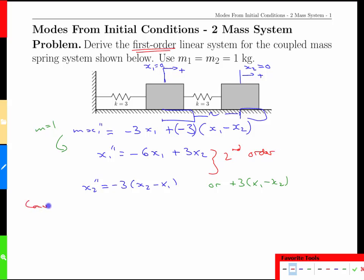Our process for that conversion to first order is to define a new vector of values. Let's pick an anonymous kind of variable, let's call it w, which is w1, 2, 3, and 4. We need one variable for every derivative.